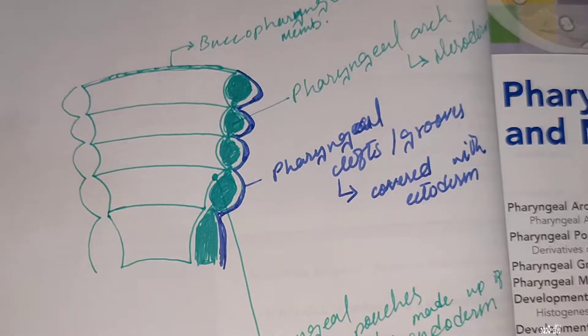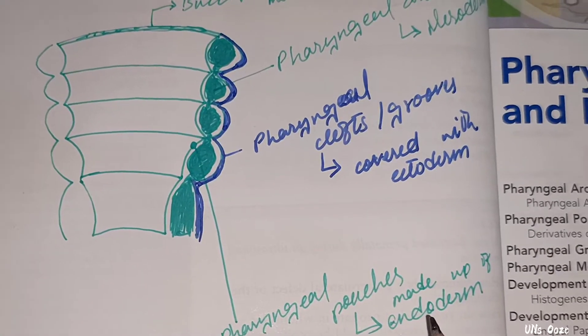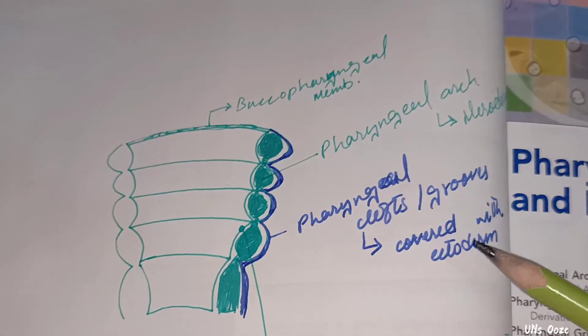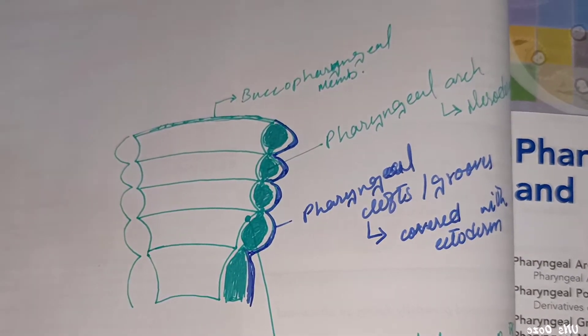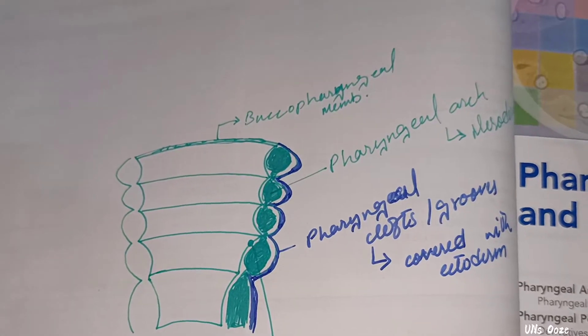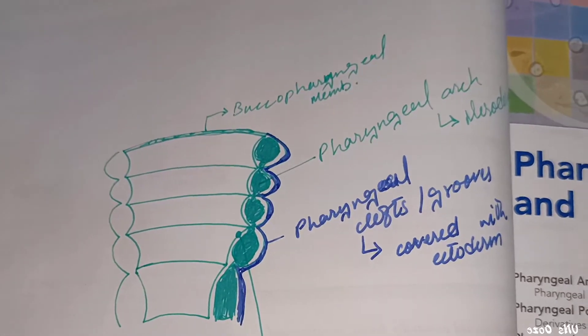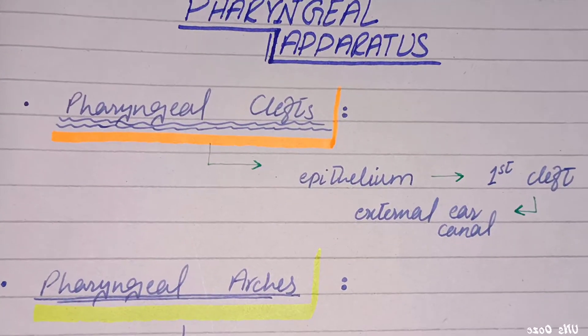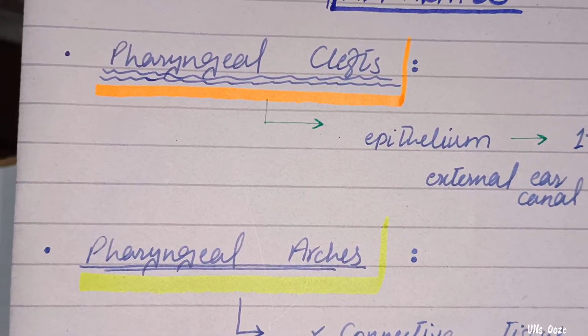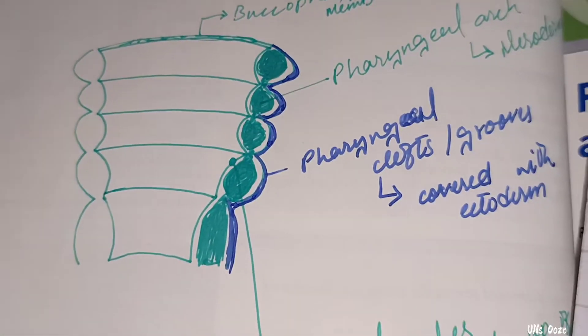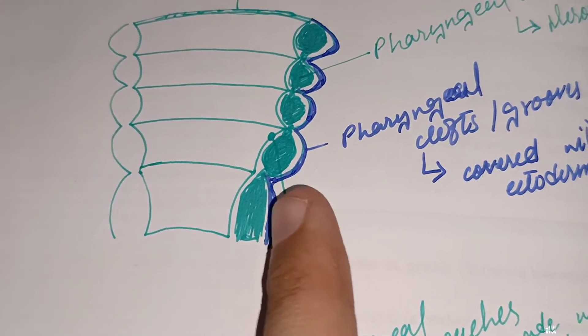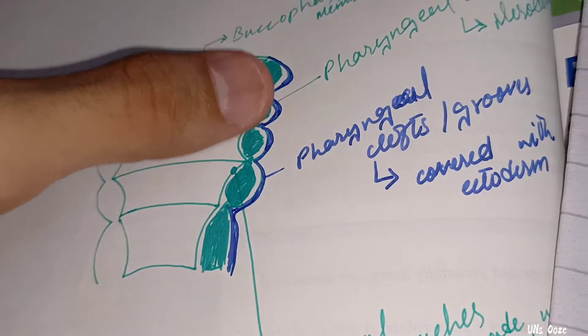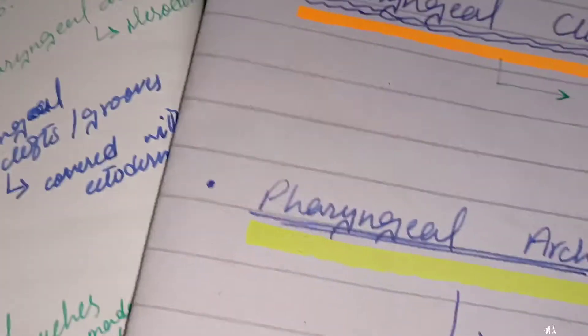The internal areas are called pharyngeal pouches, and these are made up of endoderm. So basically there are three terms: pharyngeal arch, pharyngeal clefts, and pharyngeal pouches — and this is the structure we will cover.